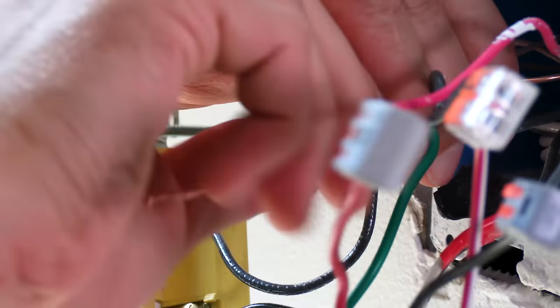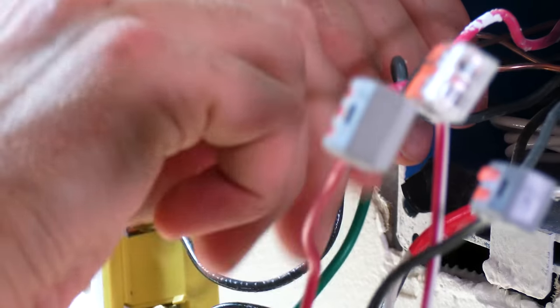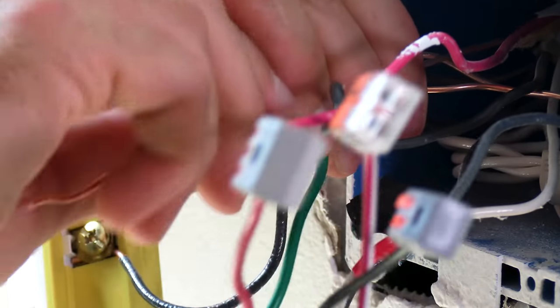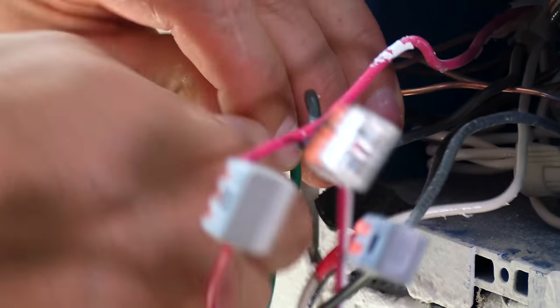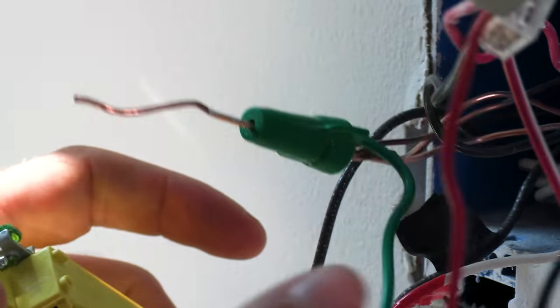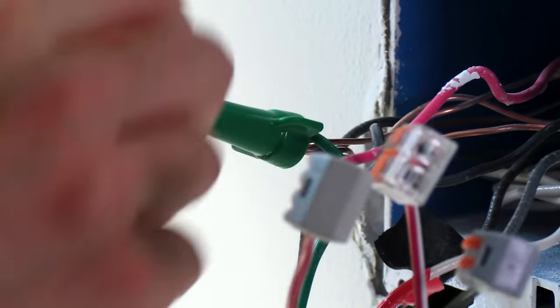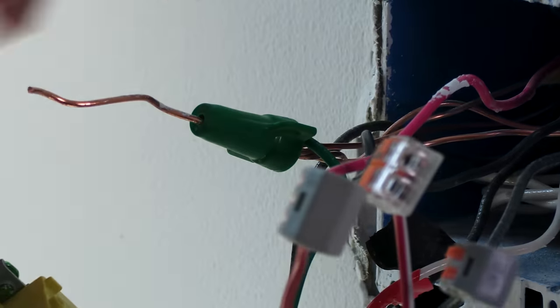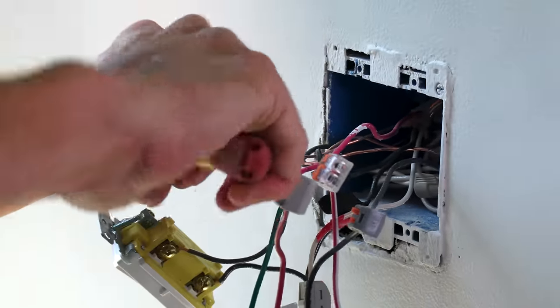So, now this is my mechanical connection that's required by code to incorporate all my grounds. Yep, tug test reveals that it's firmly attached. So, now my dimmer's grounded. My grounding continuity is complete. And all I need to do is wrap this around my single pole switch.